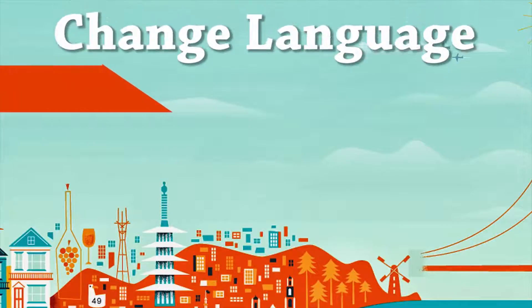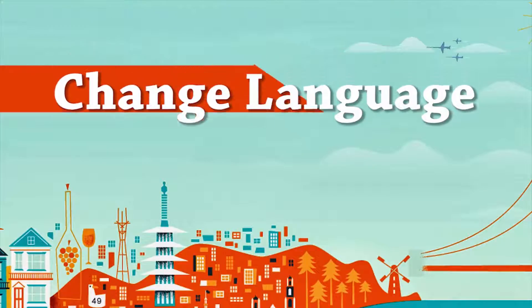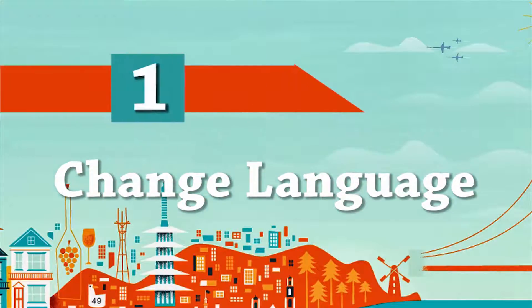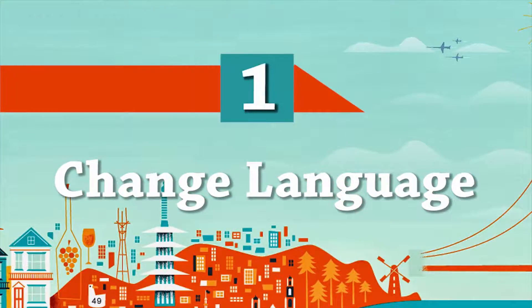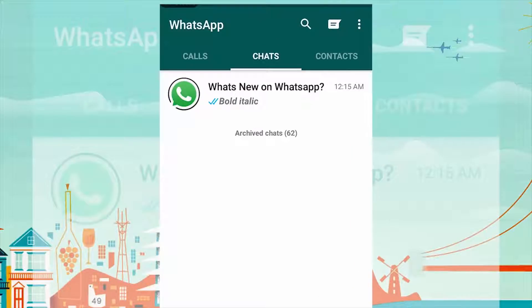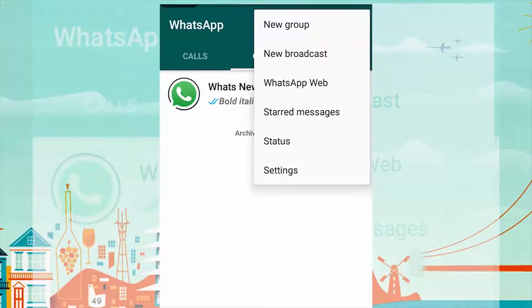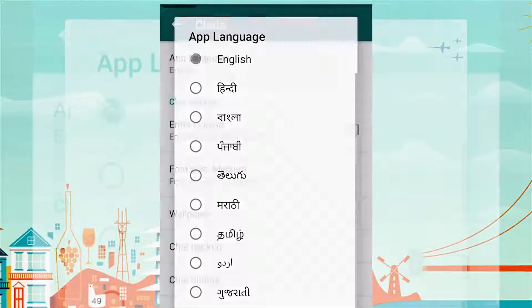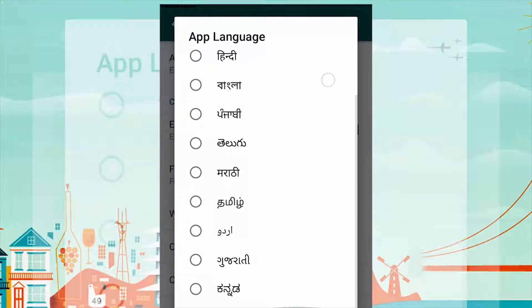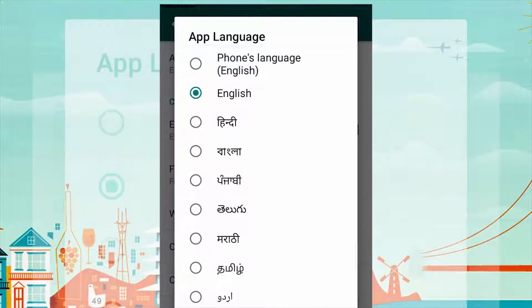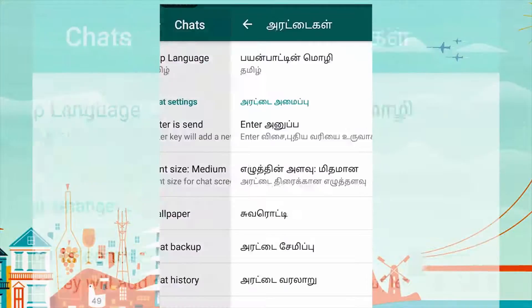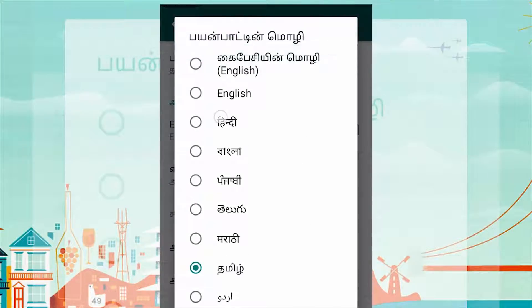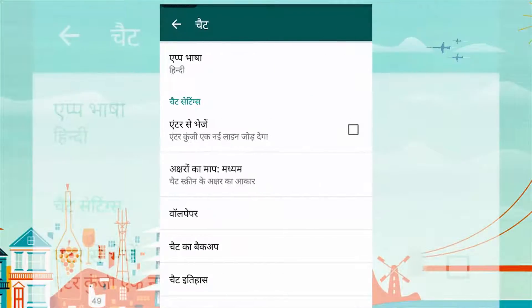You can change the language of the WhatsApp interface to multiple Indian languages. To change language, go to Settings, then Chats. Click on App Language and select your desired language. Your interface is then displayed in the selected language.